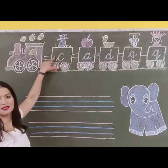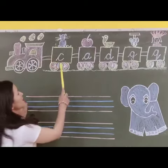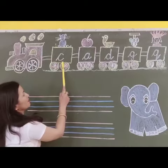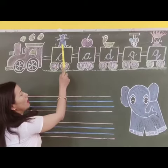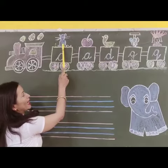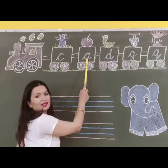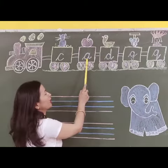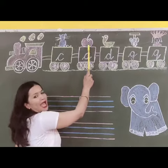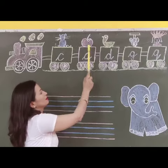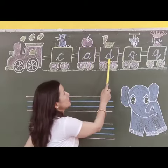What is this? Letter C. C for cat. And what is this? A. A for apple. D.